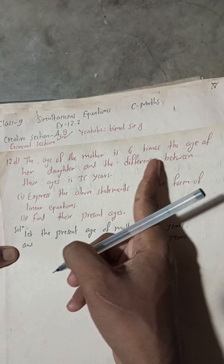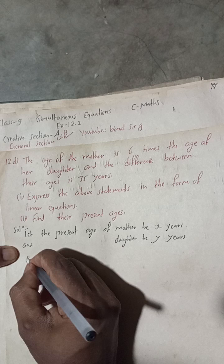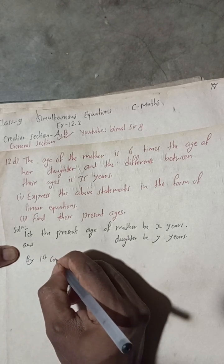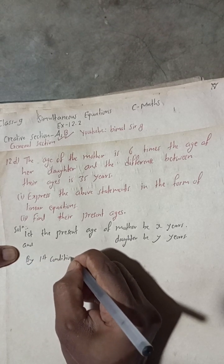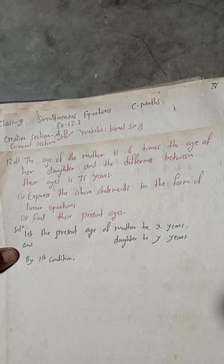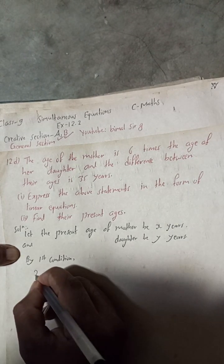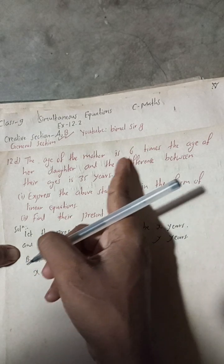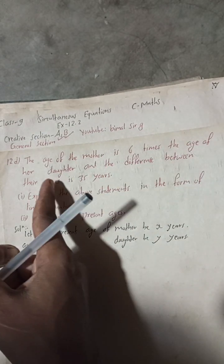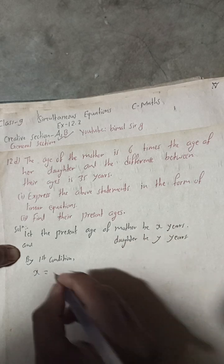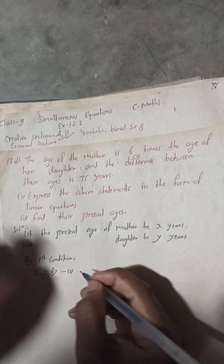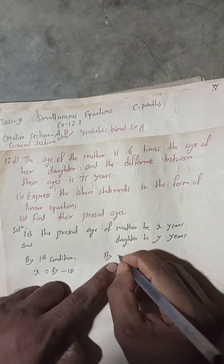By the first condition, the age of the mother is six times the age of her daughter. So mother's age x is equal to six times y, that is x = 6y. This is our Equation 1.